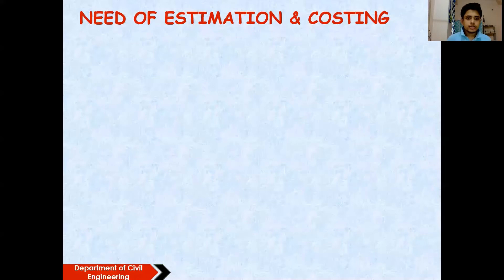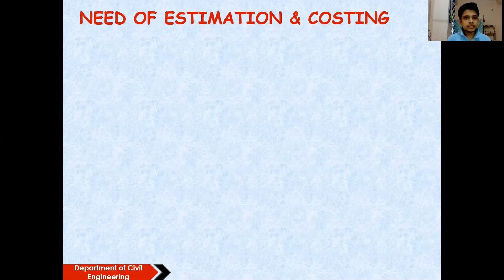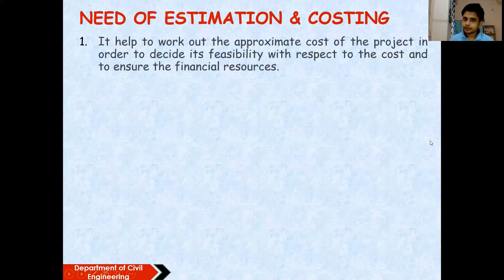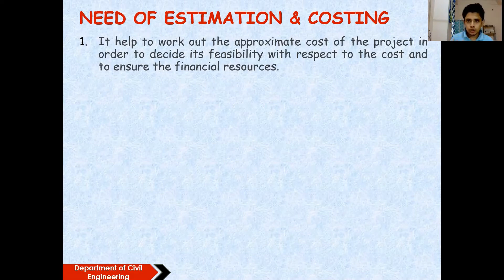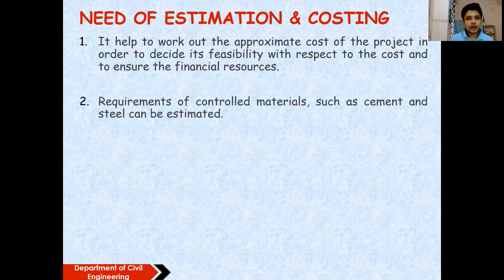Let's discuss the need for estimation and costing. The basic requirement is finding out the cost of a project — we want to know what the cost will be and whether it will be beneficial to construct this project. We also have to find out the requirement of materials like cement, sand, and steel that will be used in the construction.